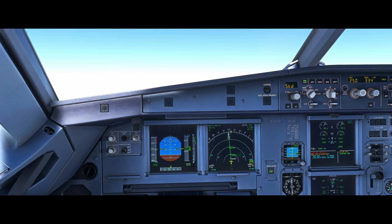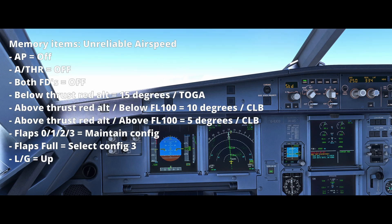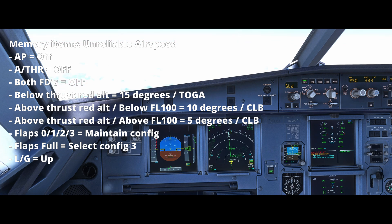If we're below the thrust reduction altitude on takeoff, we would pitch to 15 degrees and apply TOGA thrust. If we're above the thrust reduction altitude but below Flight Level 100, we would pitch to 10 degrees and select climb thrust. If we're above thrust reduction altitude and above Flight Level 100, we'd pitch to 5 degrees, ensuring that we have climb thrust available.